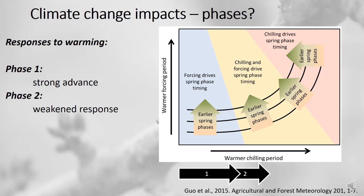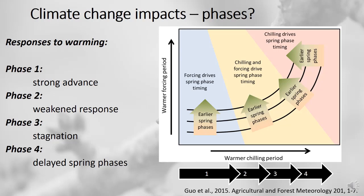We may eventually see a weakened response when the effect of inadequate chill in winter starts kicking in. There are already a few indications in the literature that phenology is not advancing as strongly as it did a few decades ago. At some point we may see stagnation — no further advance. And possibly at the latest stage, phase four, we may see delayed spring phases, when phenology is driven mainly by winter temperatures and no longer strongly by spring temperatures. This is really not well understood, and it's very difficult to predict.